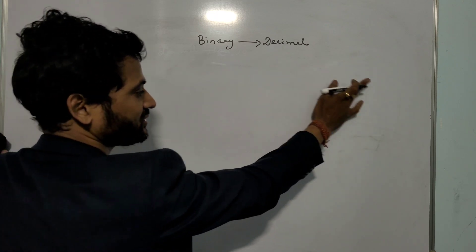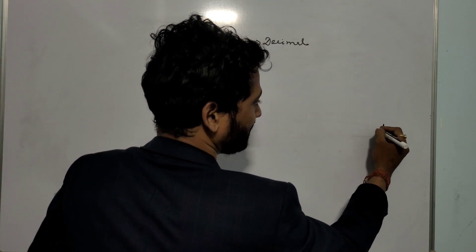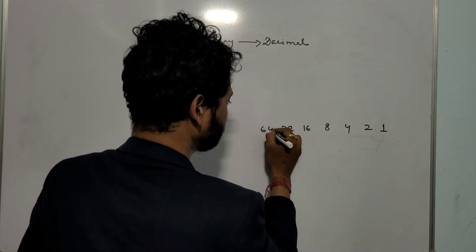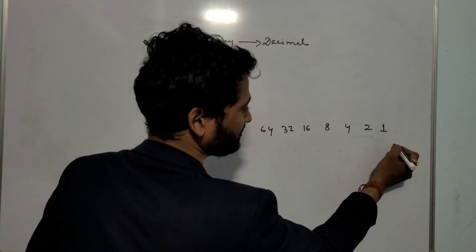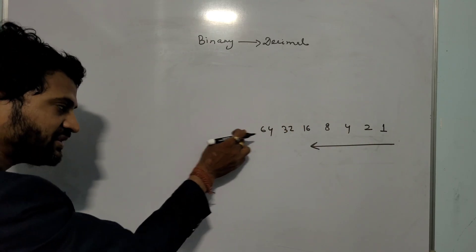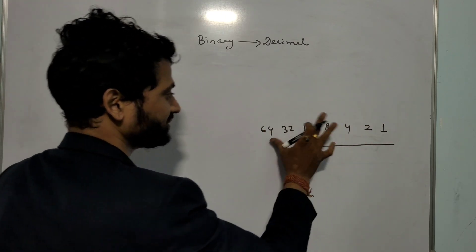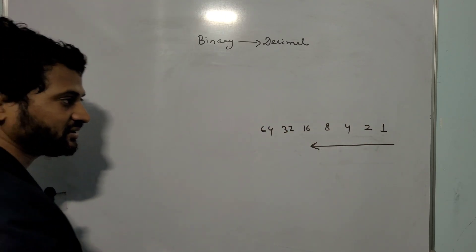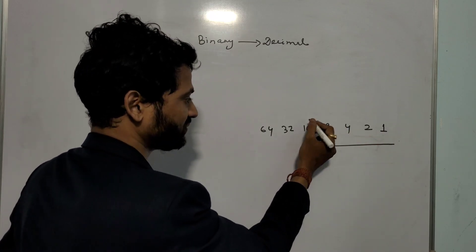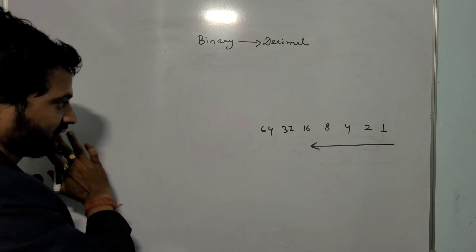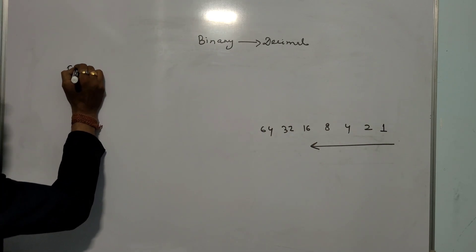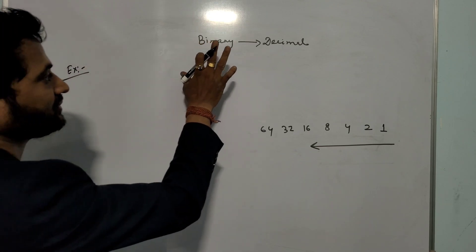One shortcut you remember: 1, 2, 4, 8, 16, 32, 64 like this. You count from right hand side. You just remember this. In the book what they write is 2 to the power 0, 2 to the power 1, 2 to the power 2, 2 to the power 3, 2 to the power 4, 2 to the power 5, 2 to the power 6. It is not required. Just remember this. We'll directly take an example.